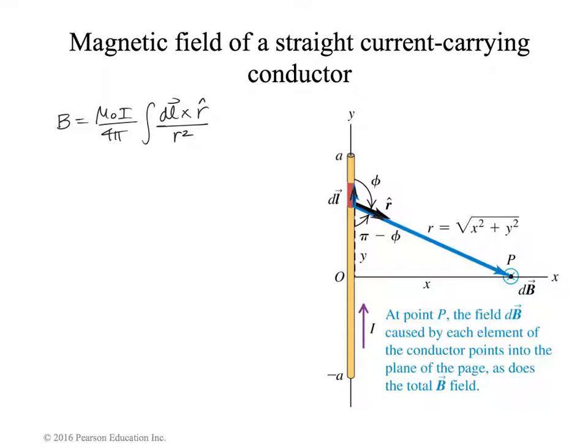Now remember that the dℓ cross r̂ means that we're interested in the sine of φ, because it's equal to dℓ times r̂ times the sine of the angle between them. And so if we look at this angle here, here's φ, notice that the sine of π minus φ is exactly the same. And so we're going to probably work with that angle because it is easier to write an expression for. We've been able to simplify our expression so far as dℓ times sine of π minus φ, simply because that's the same as sine of φ, over r².